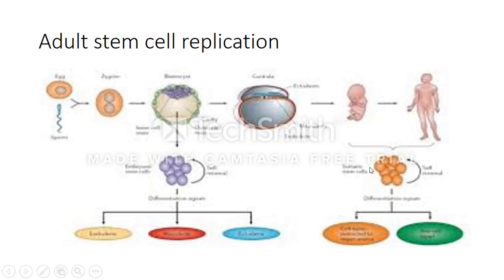To compare them: embryonic stem cells are pluripotent, meaning they can give rise to many cells — in fact, all three germ layers — though they are created with a very laborious process. Adult stem cells are multipotent, meaning they give rise to a smaller number of cells, but they are easier to isolate and replicate in lab conditions. A similarity between them is that they both rely on asymmetric division. That's the end of this lecture — I hope everybody learned something, and we'll see you next time.